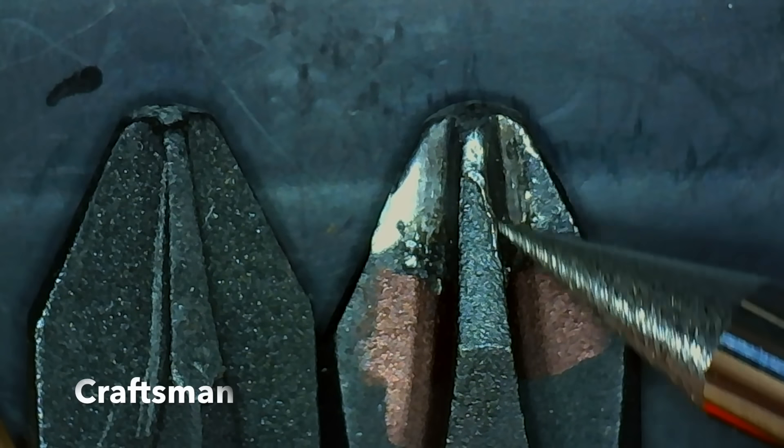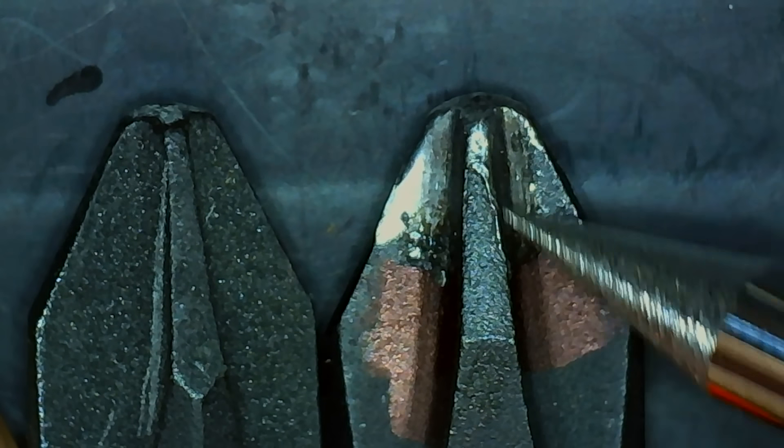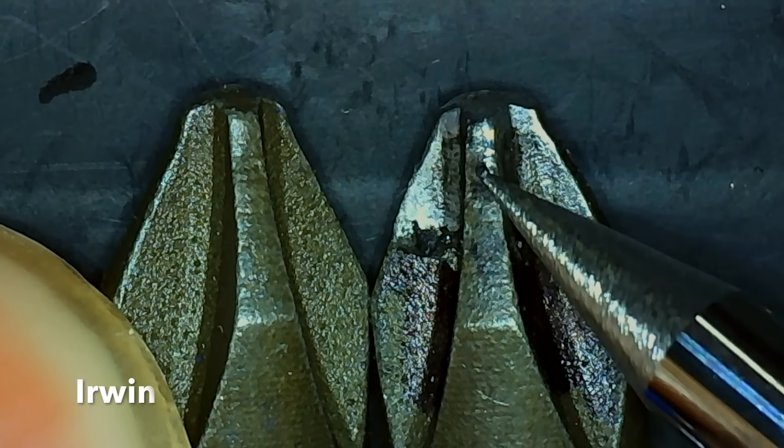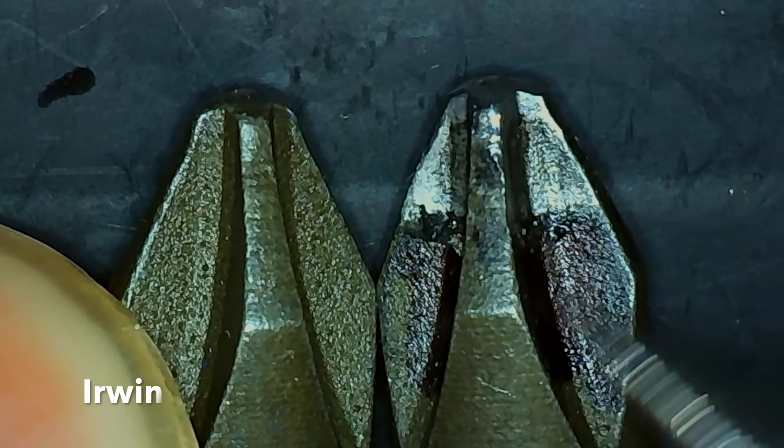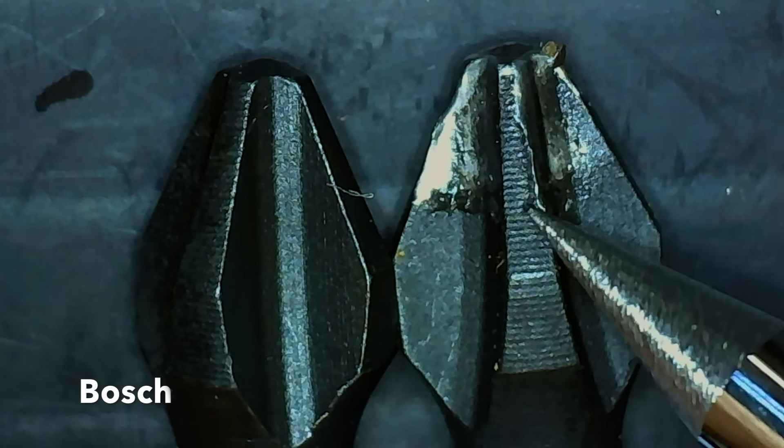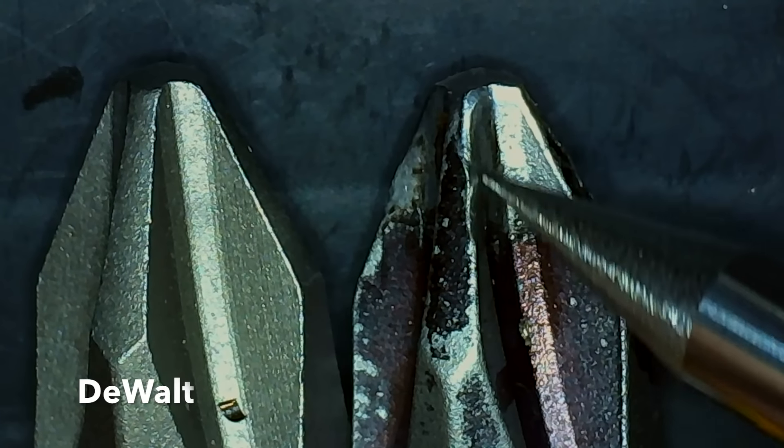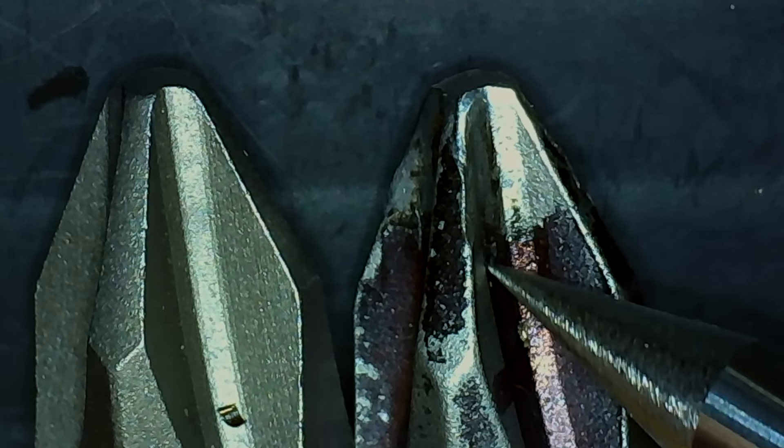While the Craftsman did provide a fairly tight fit, the width of the flutes near the tip are much more narrow and the tip actually seems slightly twisted. While there's definitely some wear on the Irwin's leading edge of the flutes, it appears less worn than the Craftsman. The Bosch was the lightest bit of all the brands and it appears to have quite a bit of damage to the flutes. While there's visible wear to the leading edge of the flutes of the DeWalt, it definitely has less wear than the Bosch.